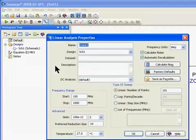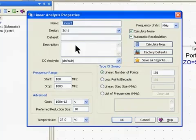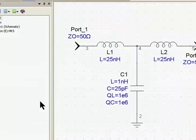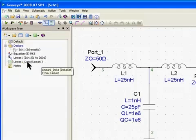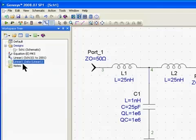If I click on linear analysis, it brings up the linear analysis properties window. I'm going to simulate this from about 1 megahertz to 2001 megahertz. I'm going to use 101 points. When I say okay, it actually calculates it automatically. As you can see in the workspace tree, it added my linear simulation and created a data set called linear one data.